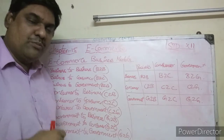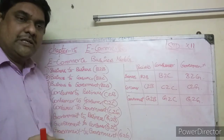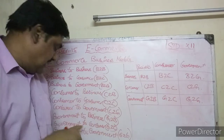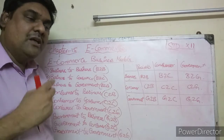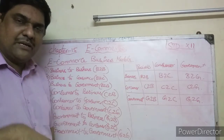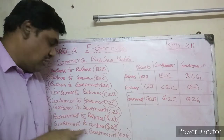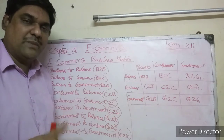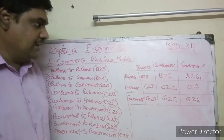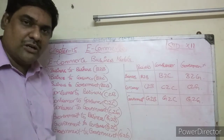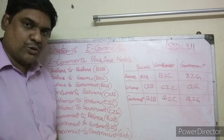Government to business is when companies apply and register through government websites. Government to consumer is when the government provides services like birth certificates and income certificates to citizens online. Government to government is transactions between two state governments or between a state and the central government, called G2G. It is easier to understand using a table. We will see the remaining things in the next video. Thank you.